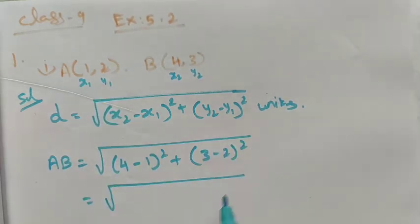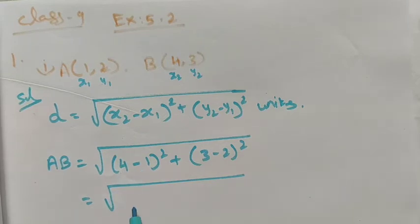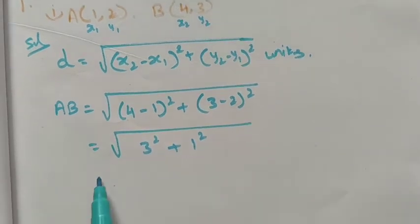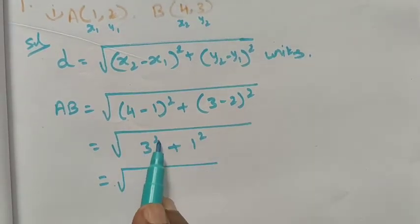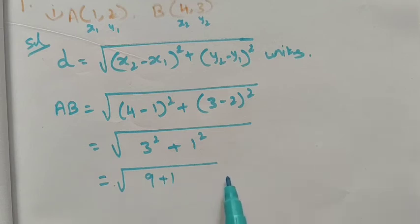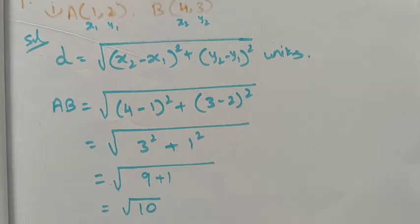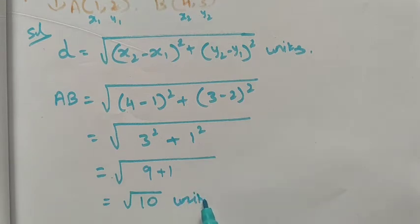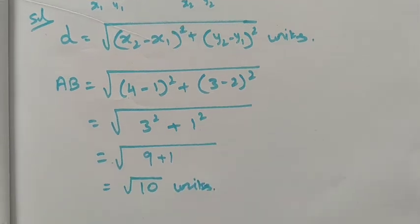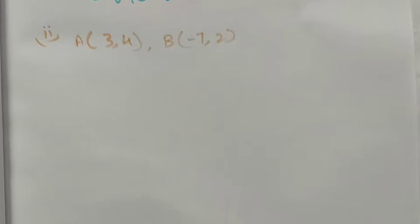This equals √(3² + 1²) = √(9+1) = √10, so that is √10 units. Next we see the second roman numeral.